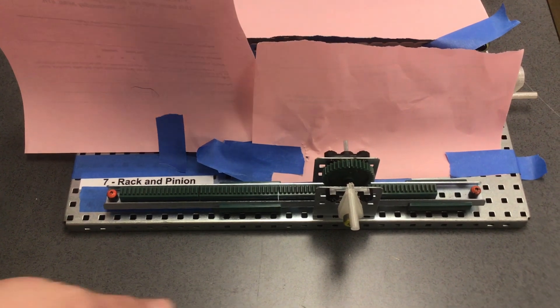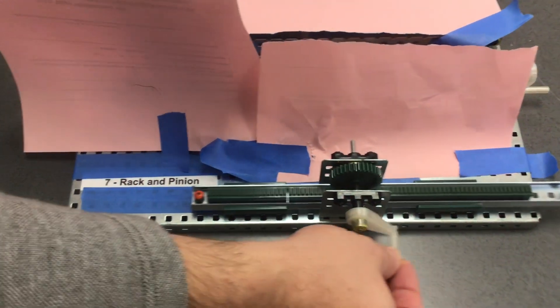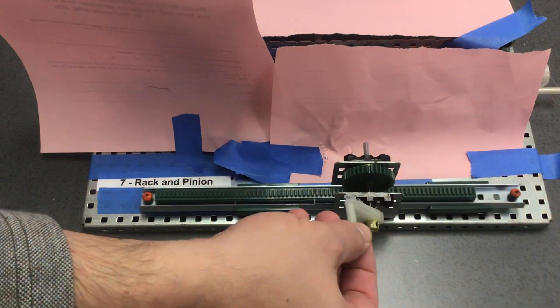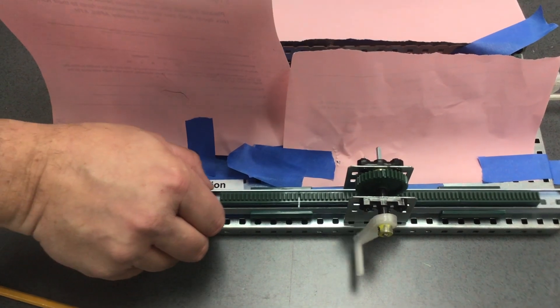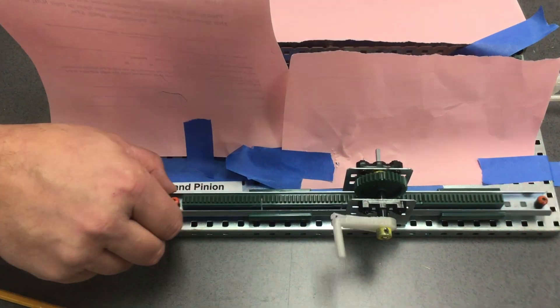Now let's talk about the flow of power. As you can see, the input moves the output, but if I grab the rack part it moves the input. So the flow of power is reversible.